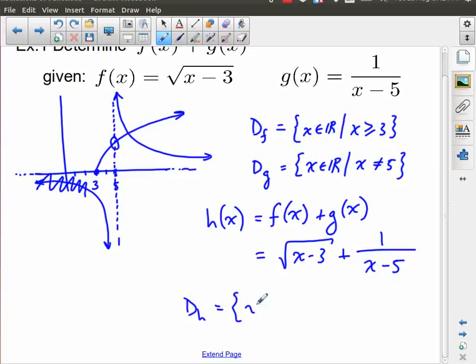What I really want to focus on now is what is the domain of H? Now we can still use real numbers, but our restrictions are the combination of both of these put together. So this one's actually still quite straightforward, because we are quite literally just saying X is greater than or equal to 3 comma X not equal to 5.